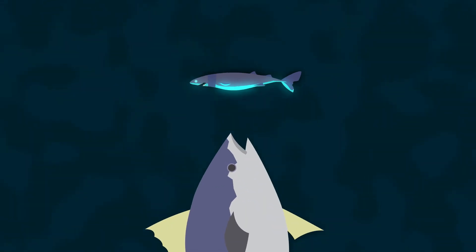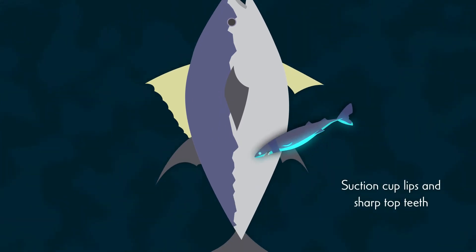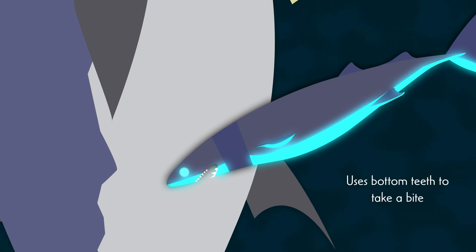The cookie-cutter shark uses its suction cup lips and top row of teeth to latch onto the attacker's body. Once attached, it uses its bottom teeth to scoop out a perfectly round hole from the prey's body, hence the name cookie-cutter shark.